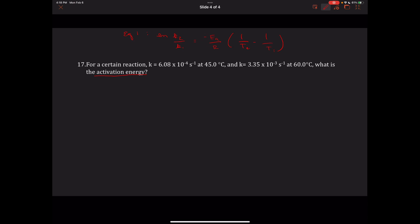Plugging into our equation: K2 refers to K at the higher temperature, so we have natural log of (3.35 × 10⁻³ s⁻¹) divided by (6.08 × 10⁻⁴ s⁻¹), equals negative Ea divided by 8.314 J/mol·K, times 1 over T2 minus 1 over T1. Converting to Kelvin by adding 273: 45°C gives 318 K, and 60°C gives 333 K.